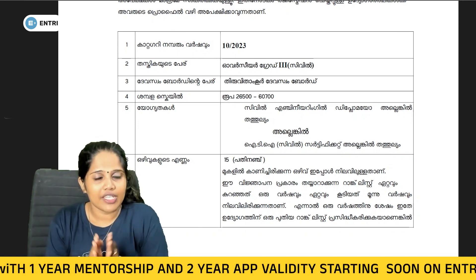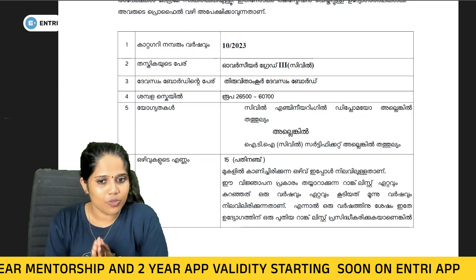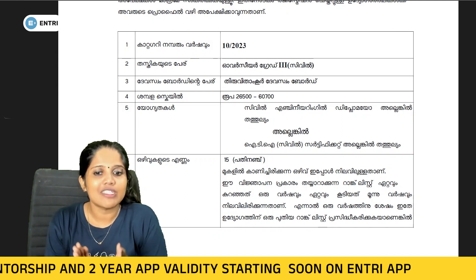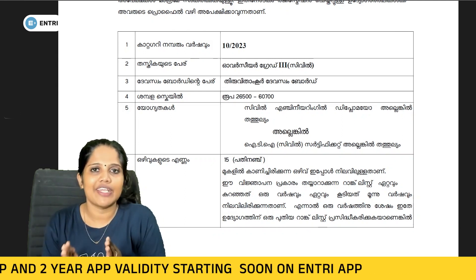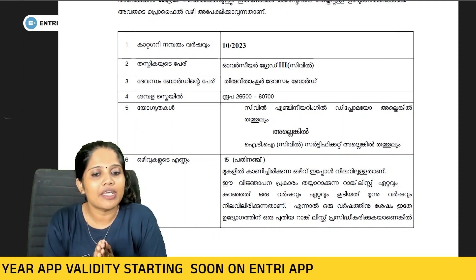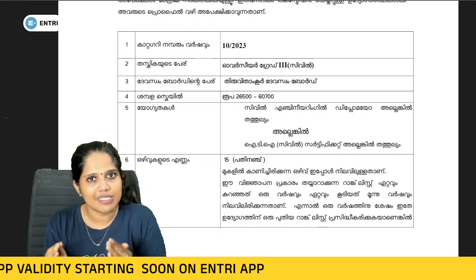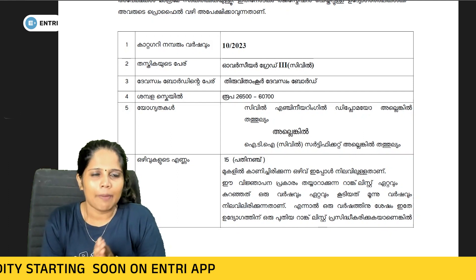Category number 1 is 10.203, Oversay Grade 3. That's why we need to know about the Devaswom Board.